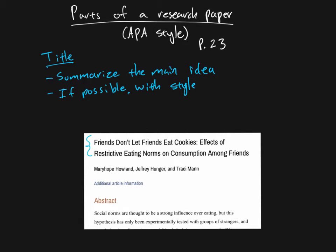But you can see here, the part that's important is this description of what the study is doing, effects of restrictive eating norms on consumption among friends. That's not necessarily the most gripping title, but it's very descriptive in terms of telling you what the study actually did. It is only one sentence, so there's certainly a limitation to what they can tell you. But it is far more descriptive than you might normally expect from a title.